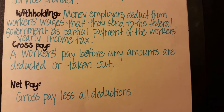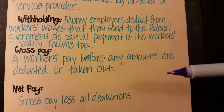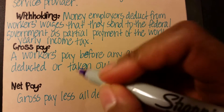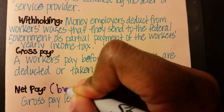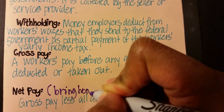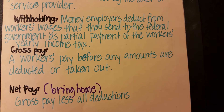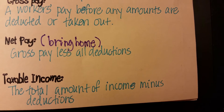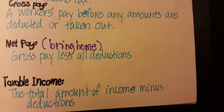Your net pay is whatever your gross pay is, less all those deductions that are taken out. That's what you bring home — your bring home pay, what you pocket. Then you have your taxable income, which is the total amount of income minus the deductions.